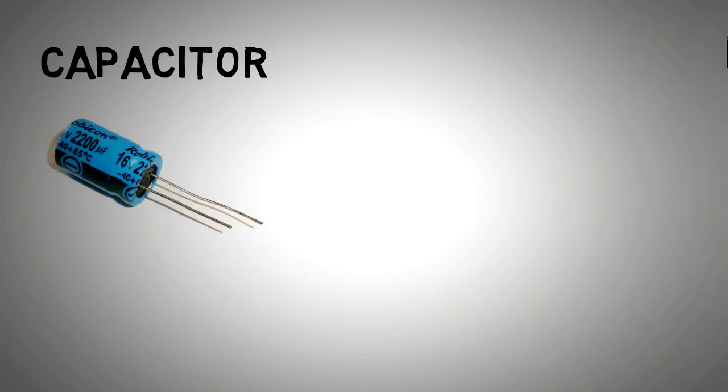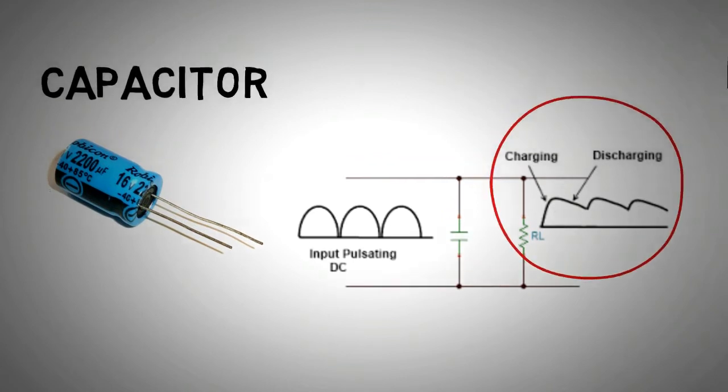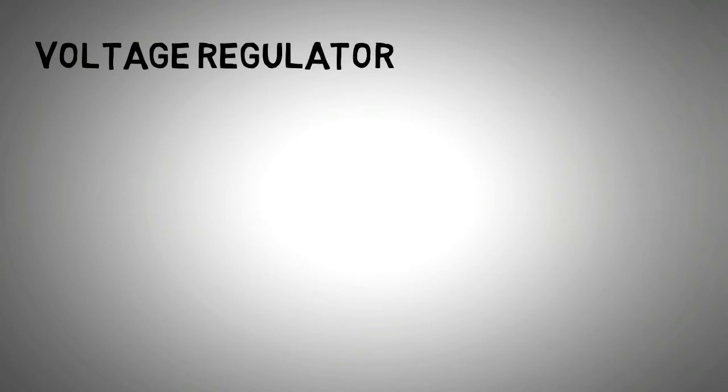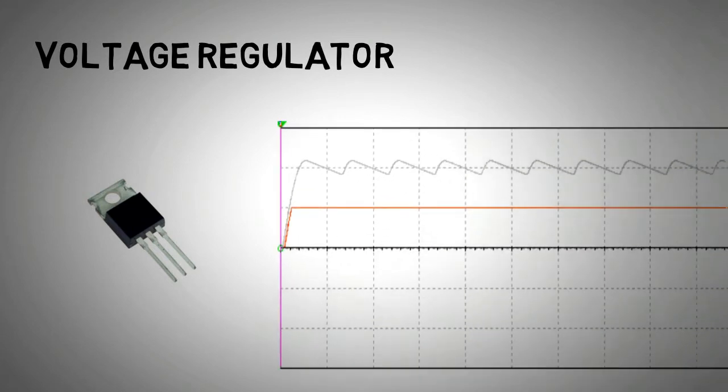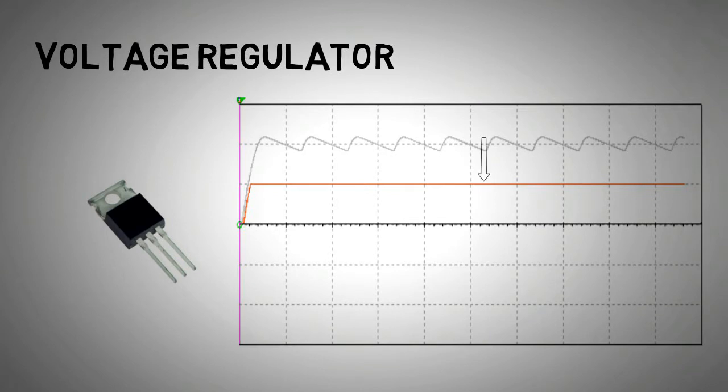To remove the fluctuation a capacitor is used. This process is called filtering. The filtration process removes the fluctuation to a large extent but the voltage still has some variation and this brings us to the fourth step. And in this step this variation is removed by a voltage regulator. The voltage regulator evens out the voltage. The output of the regulator however is two volts below the input voltage. So to get 12 volts output you should supply at least 14 volts input to the regulator. So now that we have understood what a power supply is let's get back to our circuit.